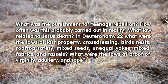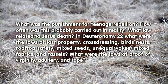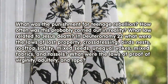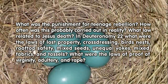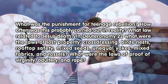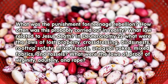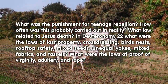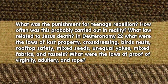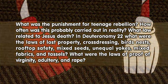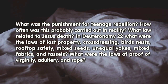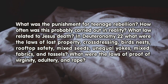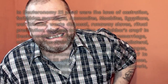In Deuteronomy 22, what were the laws of lost property, cross-dressing, bird's nests, rooftop safety, mixed seeds, unequal yokes, mixed fabrics, and tassels? What were the laws of proof of virginity, adultery, and rape?